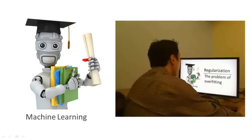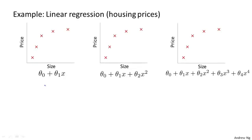So what is overfitting? Let's keep using our running example of predicting housing prices with linear regression, where we want to predict the price as a function of the size of the house. One thing we could do is fit a linear function to this data, and if we do that maybe we get that sort of straight line fit to the data.